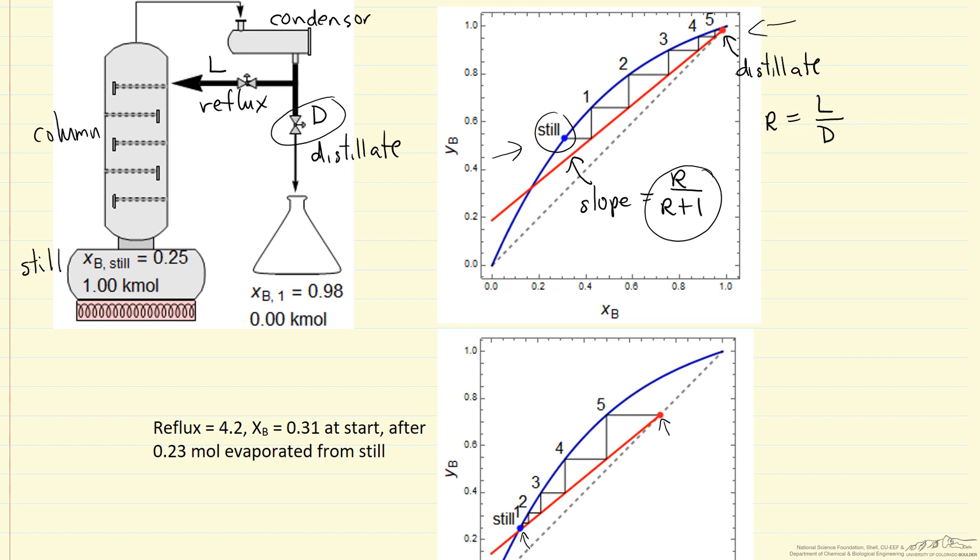Well, the other aspect we want to look at is what happens to the temperature. So the temperature is going to be higher at the bottom of the still than at the top. But the temperature in all locations also changes with time because the composition changed. And the temperature increases because as the batch distillation proceeds we become enriched in the less volatile component, the component with a higher boiling point.